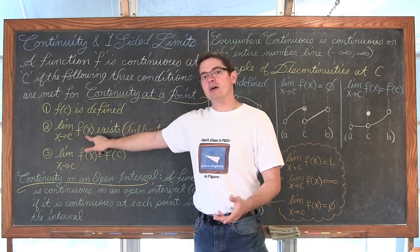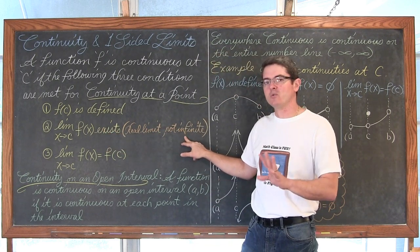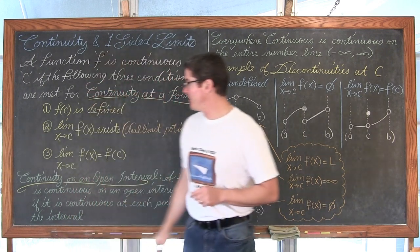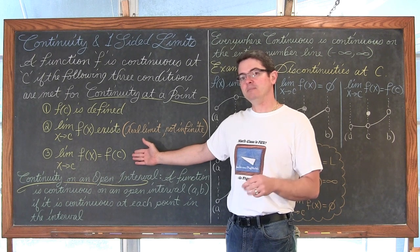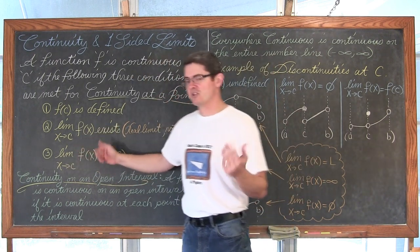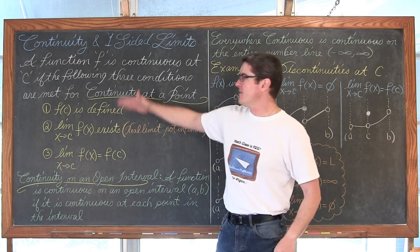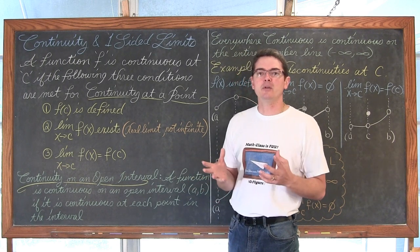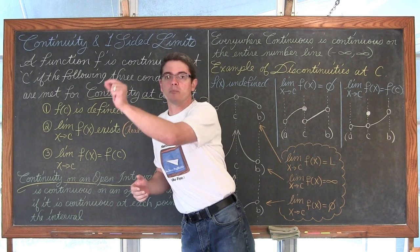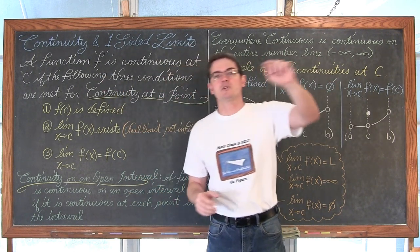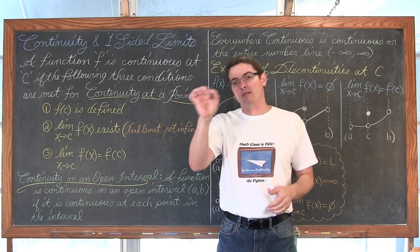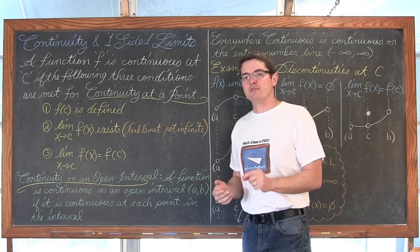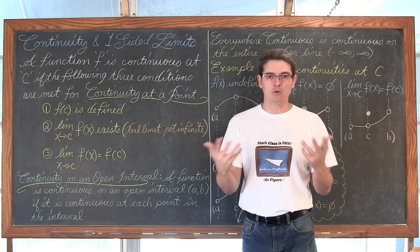Second, the limit as x approaches c of f must exist — we need a real limit, not the graph going off to infinity. Third, the limit as x approaches c of f(x) must equal f(c). Visually, continuity is simple: can you take your pencil and draw the entire function in one smooth continuous motion? A discontinuity is anywhere you have to pick up your pencil — at a hole, or where you skip a vertical asymptote.